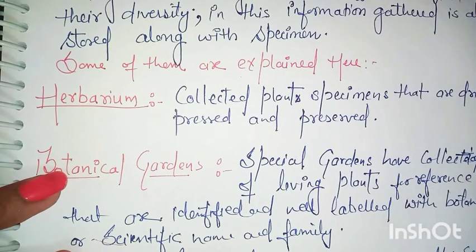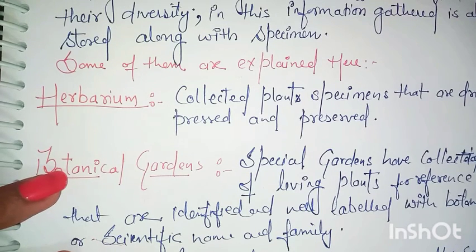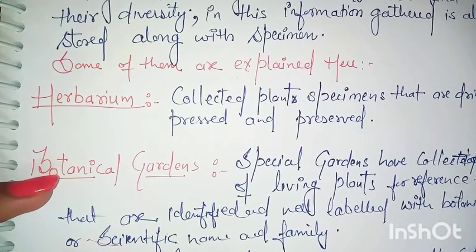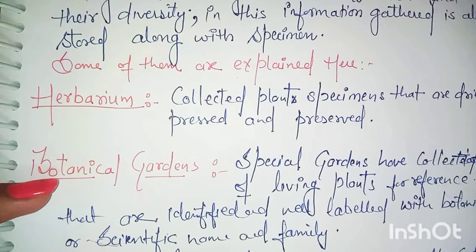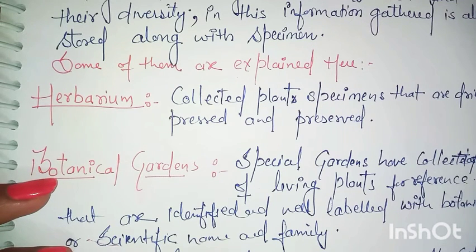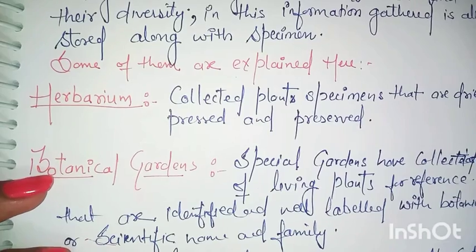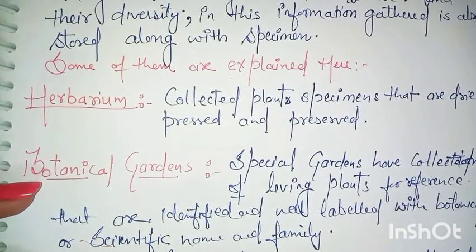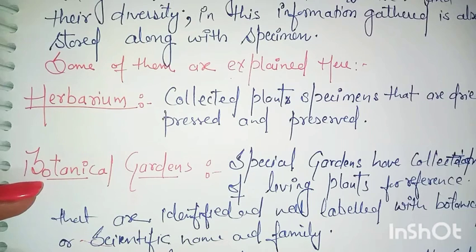The herbarium sheet contains information about the family and genus it belongs to, along with dates, local and English language names, as well as the botanical name. Both local and botanical names are written on the herbarium sheet. We can collect and remember the name of the herbarium.